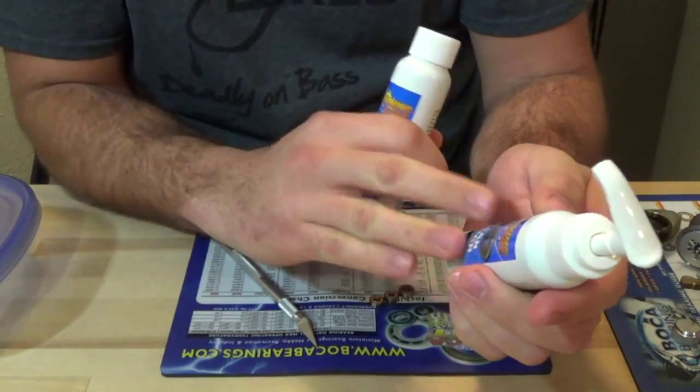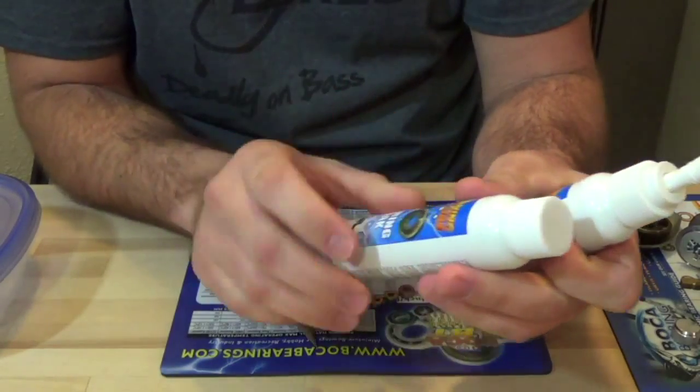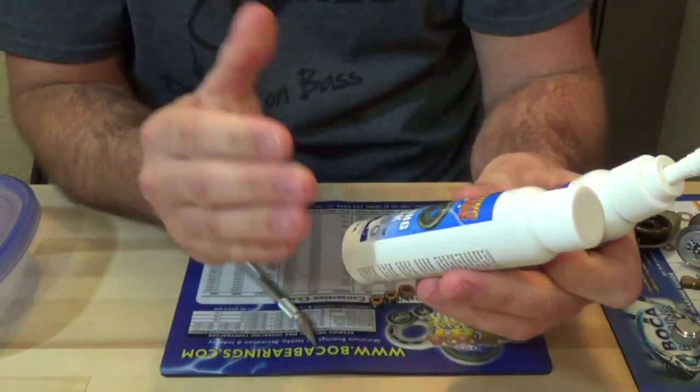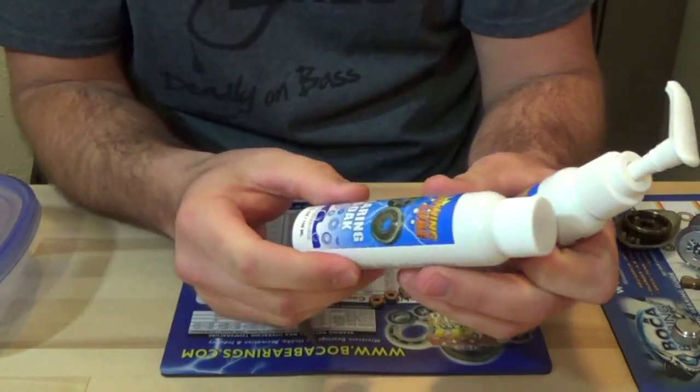This is going to be the degreaser to help break down the oils and things like that in the bearings. Then after that you'll use the Bearing Soak and that's just going to help protect the bearings and help prolong the life of the bearings.